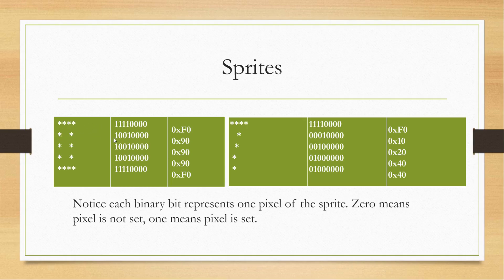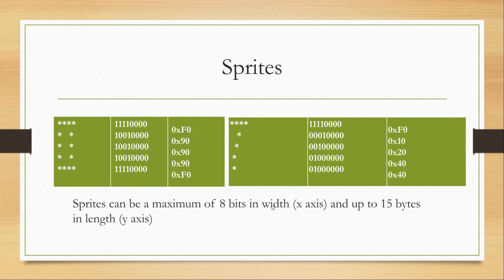If we look at the second row, the binary equivalent is 1, 0, 0, 1 — this one is on, this one is not, this one is on. The middle two bytes are 0, which gives us a completely empty middle, and then it ends with a 1 again. Sprites can be a maximum of 8 bits in width — hence 8 bits in a byte — and you can clearly see that each row is represented by 1 byte by looking at the binary equivalent.